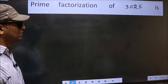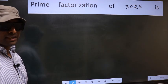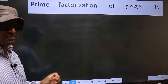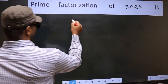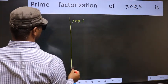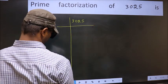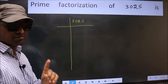Prime factorization of 3025. To do prime factorization, first we should frame it in this way: 3025. This is your step 1.